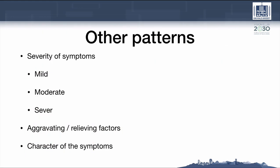Other features of diseases you should ask about include the severity of symptoms ranging from mild, moderate, or severe; any aggravating or relieving factors; and sometimes the character of the symptoms. The nervous system has central and peripheral components. Without being organized, without having an approach or a system, you may really miss a lot of these symptoms.